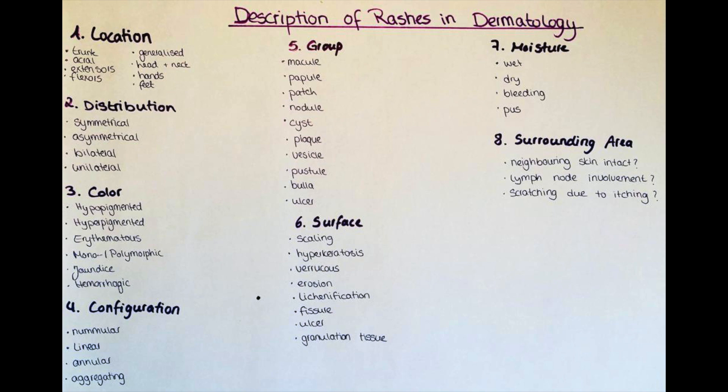The second point is the distribution of the rash. At first it sounds like it is pretty much the same as the location, but here you describe whether the rash is symmetrical or asymmetrical — for example if it is on both sides of the spine or if it is like the typical butterfly rash in lupus. Also you can describe if it is bilateral or unilateral, for example if it is only found on one arm.